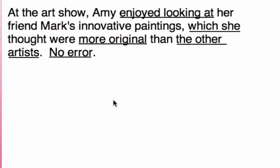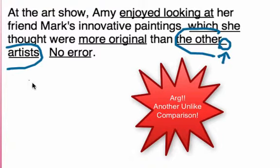Number six: At the art show, Amy enjoyed looking at her friend Mark's innovative paintings, which she thought were more original than the other artists. This is an unlike comparison — you cannot compare Mark's paintings to the other artists who are people. Although you might argue Amy thought Mark's paintings were more interesting than the other people, the SAT will call this an unlike comparison.